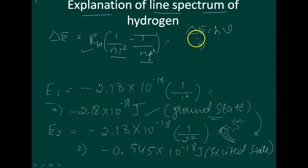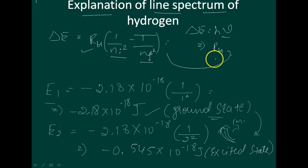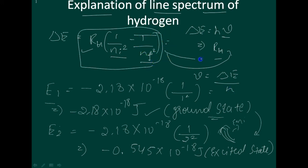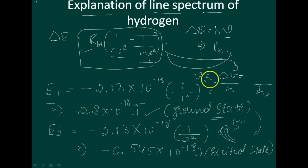Since delta E is equal to h times v, and delta E equals RH into 1 by Ni squared minus 1 by Nf squared, the frequency v can be written as delta E divided by h. Substituting the delta E expression, v equals RH into 1 by Ni squared minus 1 by Nf squared, all divided by h.